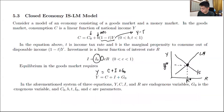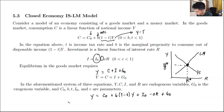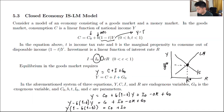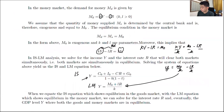To derive the IS equation explicitly, you write Y equals C₀ plus b(1-t)Y plus I₀ minus cR plus G₀. Collect all Y terms on one side: Y minus b(1-t)Y equals C₀ plus I₀ minus cR plus G₀. Factor out Y: [1 minus b(1-t)]Y equals C₀ plus I₀ minus cR plus G₀. Dividing both sides gives Y equals (C₀ plus I₀ minus cR plus G₀) divided by [1 minus b(1-t)]. That is your IS equation.